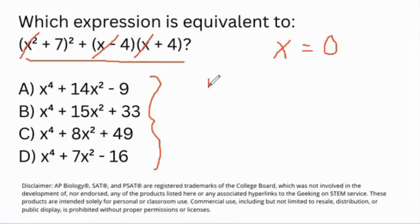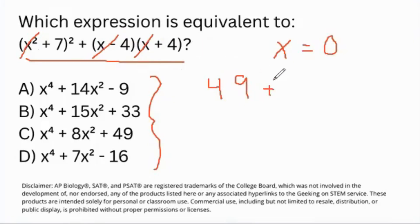So x squared is the same as zero, same as x and x, and we can just eliminate them. So 7 squared is 49 — you can plug that into your calculator. And then 4 times 4 is 16, and because it's negative times a positive, that's the same as negative 16.